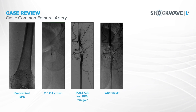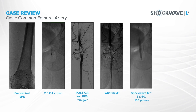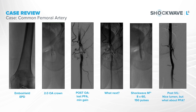As you can see from this slide, I did try to get a wire in that profunda unsuccessfully. So I said, let me just take care of this common femoral because that's really his culprit lesion. We treated that with an M5 plus 8-millimeter device — a very, very nice result. No dissection at all.